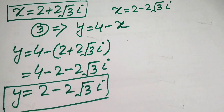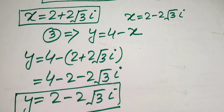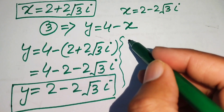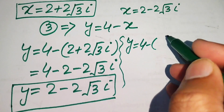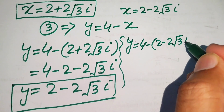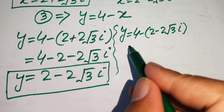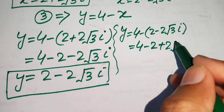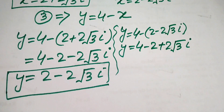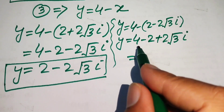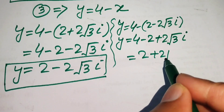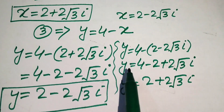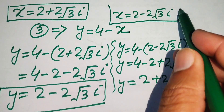Similarly, substituting the second value of x: y = 4 − (2 − 2√3·i). Multiplying through the negative sign gives minus 2 plus 2√3·i, so y = 4 − 2 + 2√3·i = 2 + 2√3·i.